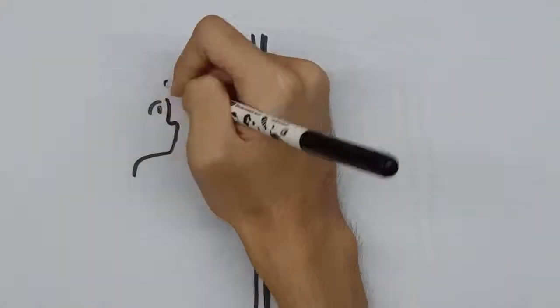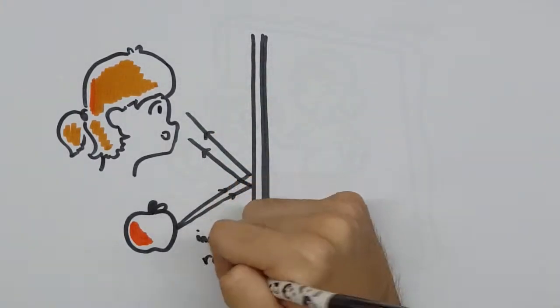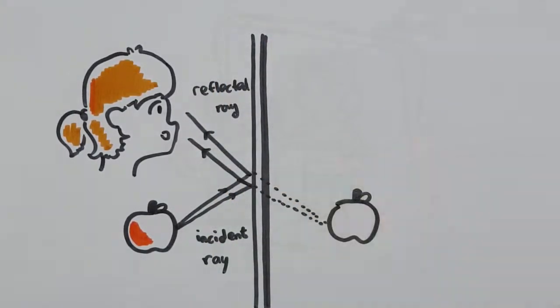Keeping the previously mentioned law of reflection in mind, the way all this light enters your eyes creates a virtual image that looks like this. This is why your reflection is a light print of you.